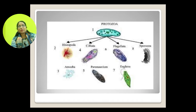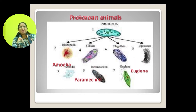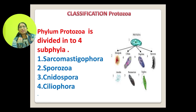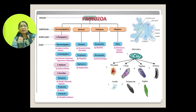Different animals such as Amoeba, Paramecium, and Euglena can be placed in different subphyla and classes under Phylum Protozoa. Phylum Protozoa is divided into four subphyla: first Sarcomastigophora, second Sporozoa, third Nidospora, and fourth Ciliophora. A chart of the classification is provided.